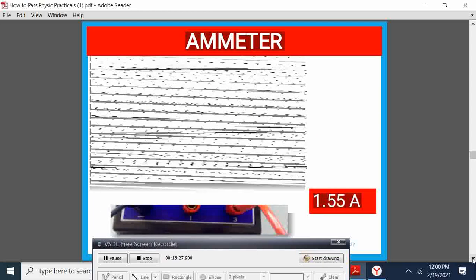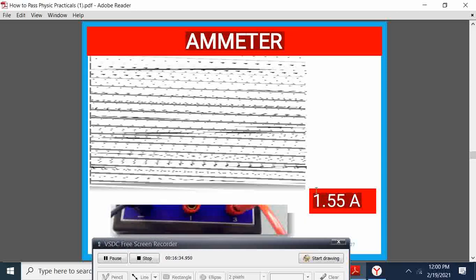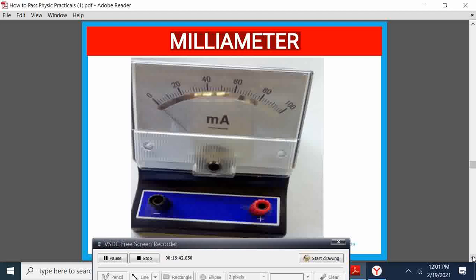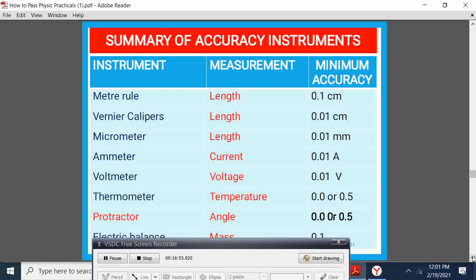However, there are some gadgets that we use. We have the ammeter. It has a scale of two decimal places. We have a voltmeter, a milliammeter. Familiarize yourself with these gadgets, and then know how to obtain the reading through practice.